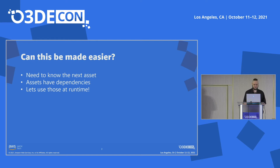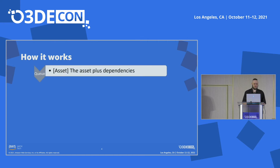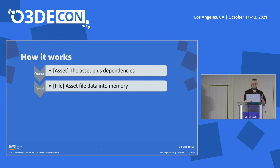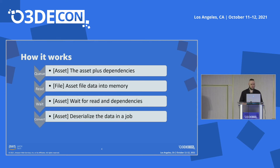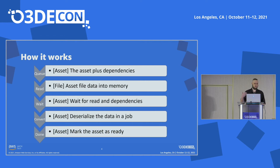Here's how the new system works: when you request an asset to load, the asset manager first goes to the asset catalog to find all dependencies and child dependencies. It compiles a list of these assets and revisits the asset catalog to get all the associated files. That full set of files is sent to the file streaming system, which reorders them for the most ideal load order. The asset manager then waits for reads to complete and for all dependencies of a single asset to be ready. Once both criteria are met, it starts a new job on a separate thread to deserialize the data into memory. When that job completes, it signals back to the asset manager that the asset is ready and available for use by the engine.